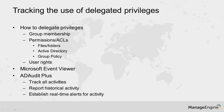Questions are coming up as we go through — about disabled accounts, locked accounts — it doesn't matter. Anything in Active Directory, you can now run a report on who made that change. This is tracking privileged use.